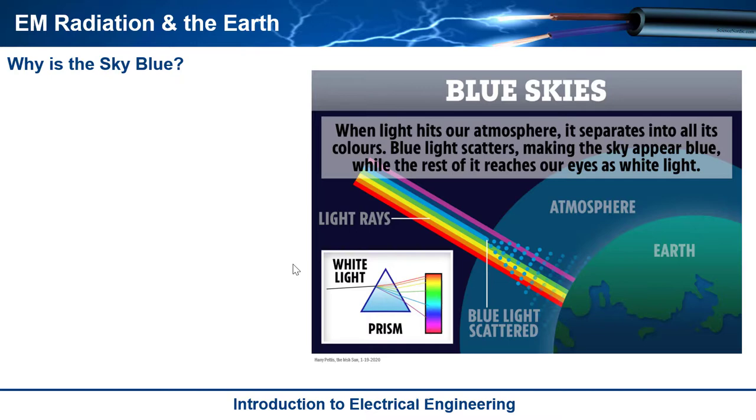So number one, the blue photons that come into our atmosphere, make it through the atmosphere, have a shorter wavelength or on the same order of magnitude in size as the nitrogen and oxygen in our atmosphere.